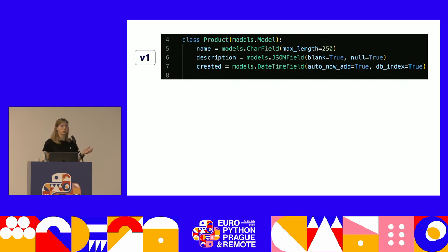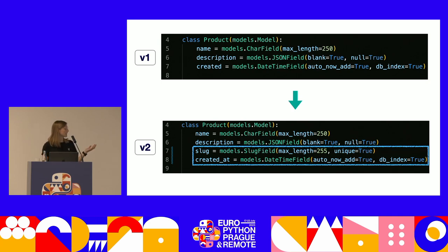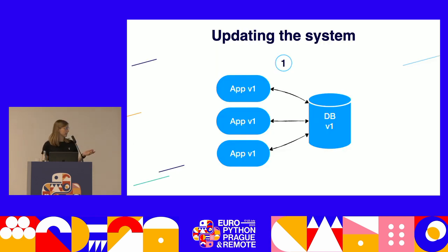Here is the product model on the current version V1. The model is a simple Python class that refers to a single database table, and the class fields refer to table columns. Our product model has name, description, and created fields. We plan to add a new unique slug field that will be a human-readable identifier of our product. Additionally, we want to rename the field created to created_at to be consistent with other parts of the project. We are currently on version V1 and assume we released these changes in version V2.